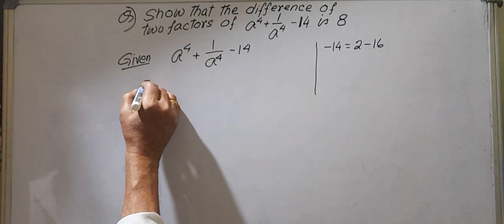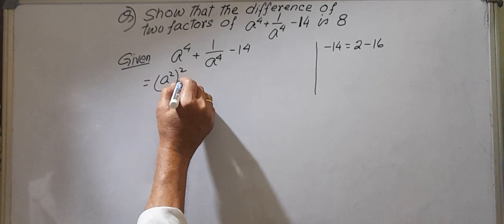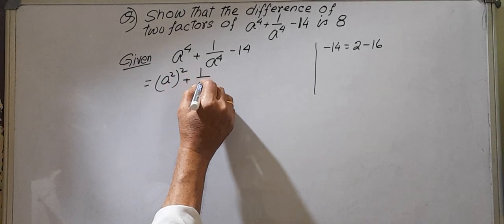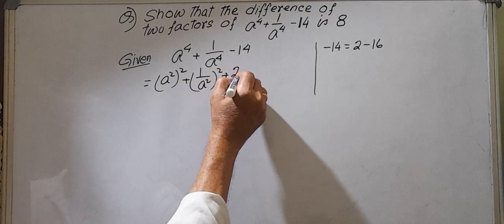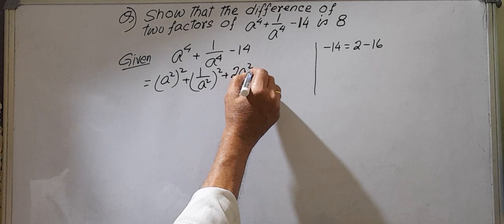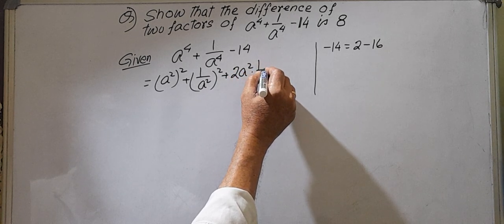Now you write like this: A square whole square plus 1 by A square whole square plus 2 A square into 1 by A square minus 2, which equals A square plus 1 by A square whole square plus 2.